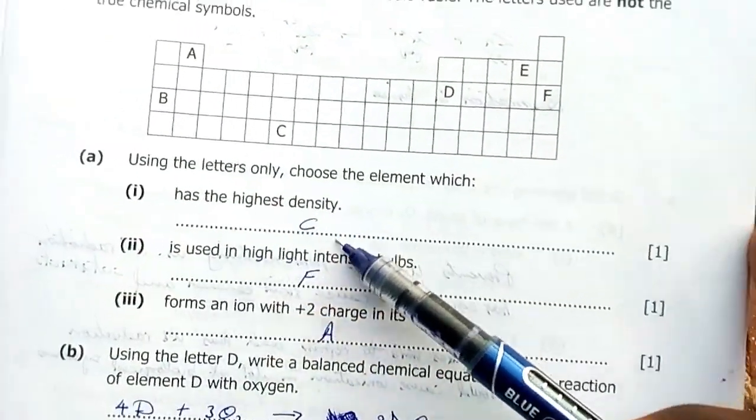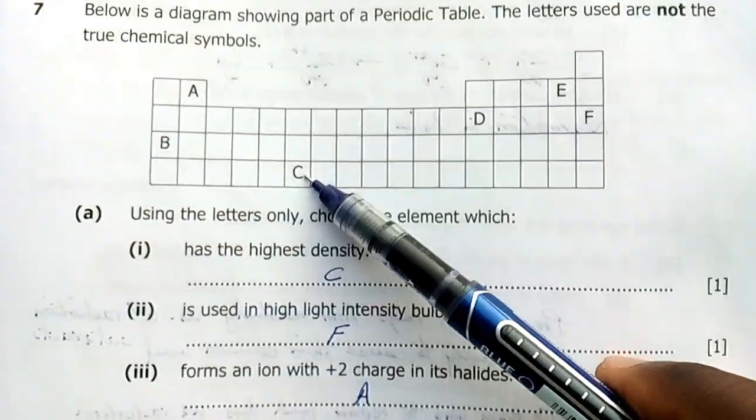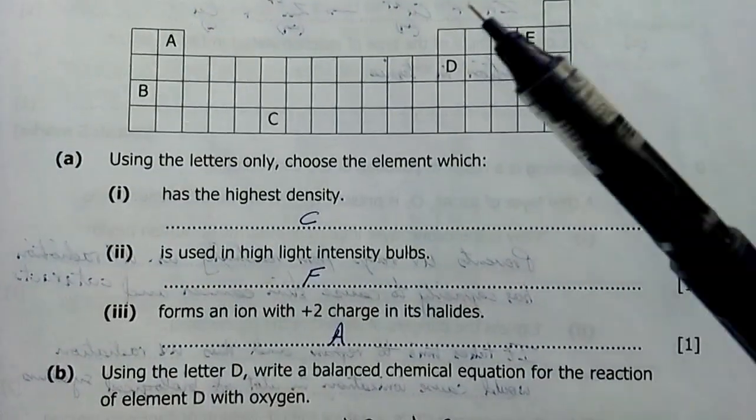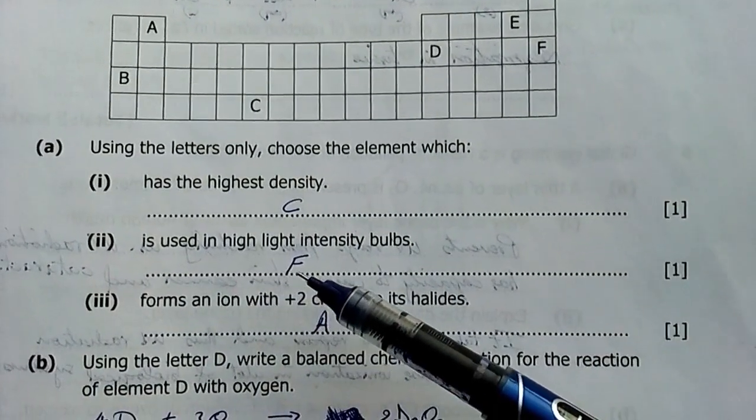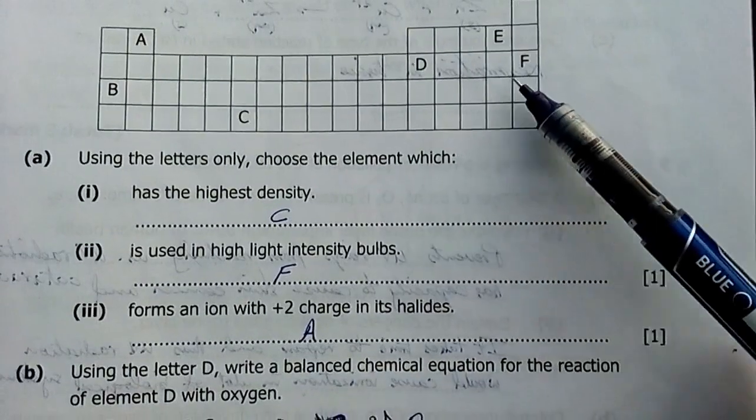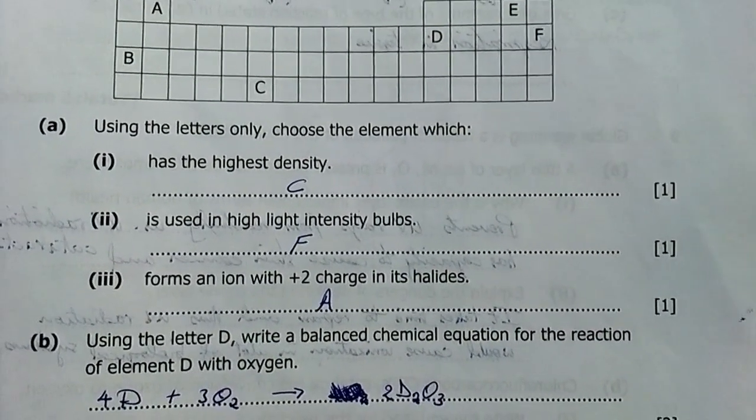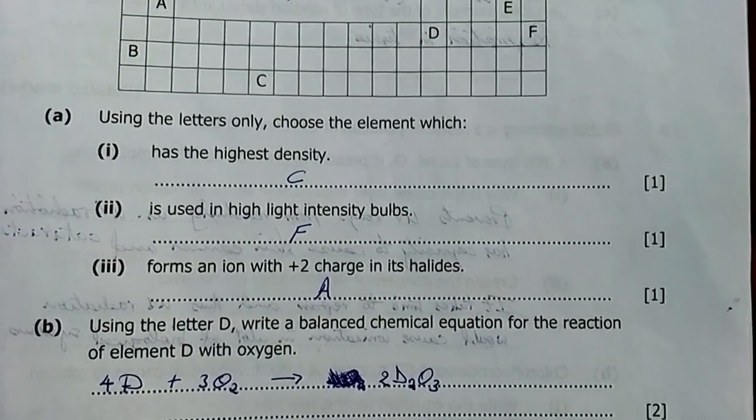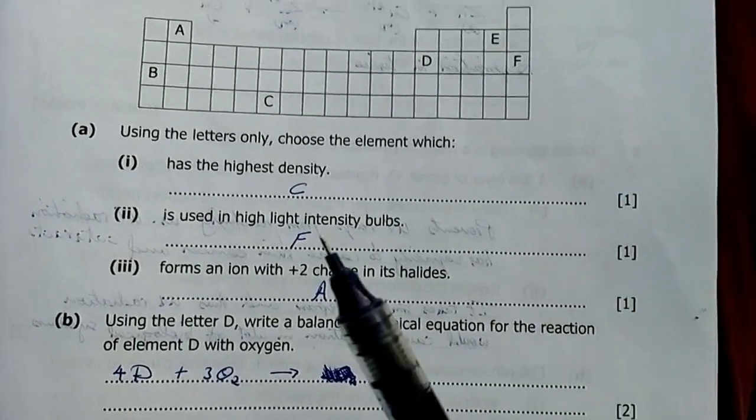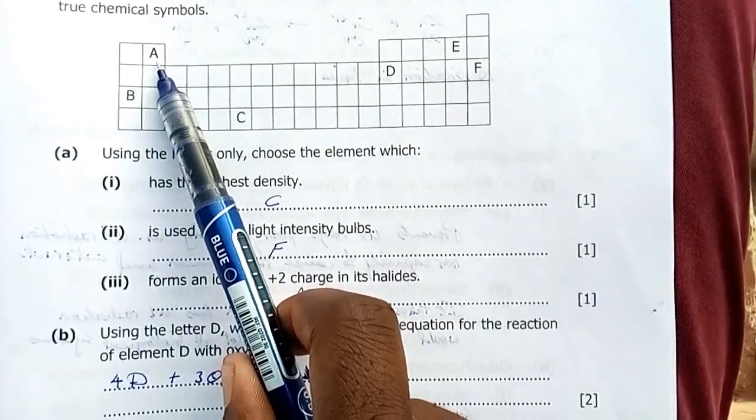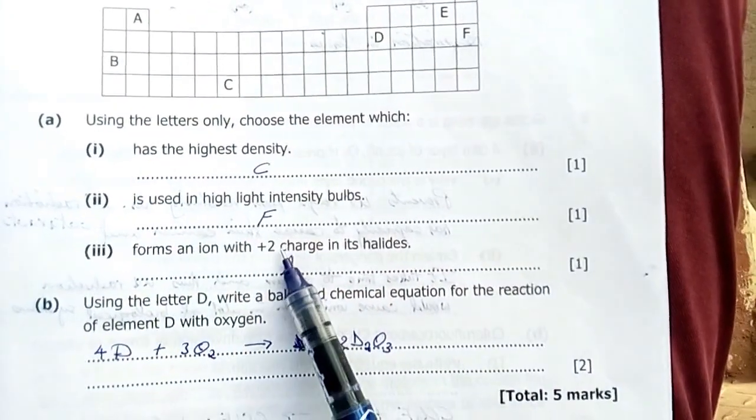Using the letters only, choose the element which has the highest density. The transition element here, C. Is used in high light intensity bulbs? F. These are noble gases. Forms an ion with 2 plus charge? You look at group 2, any group 2 element there, because I've said 2 plus.